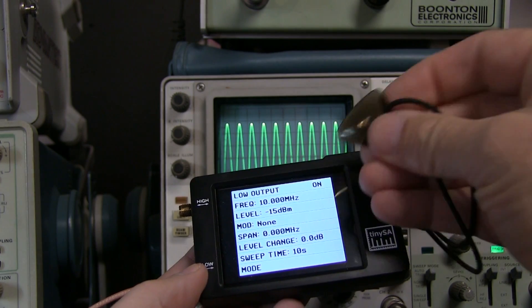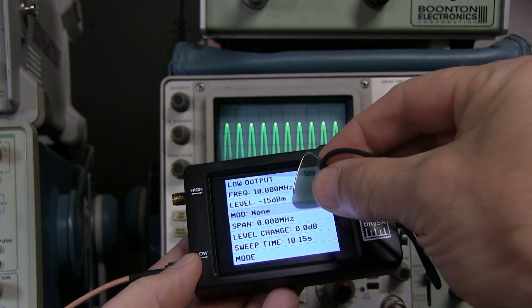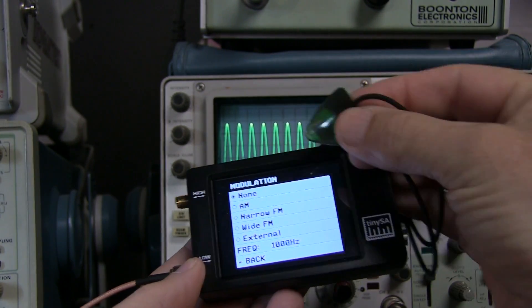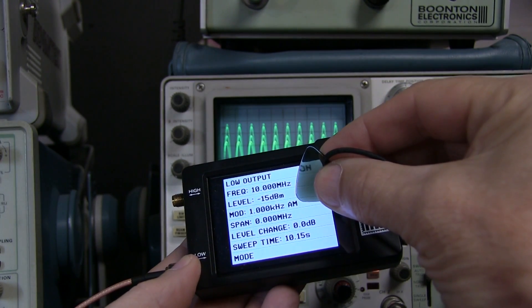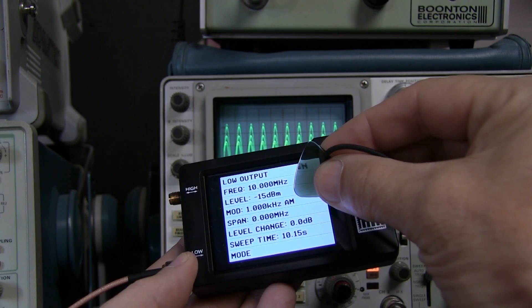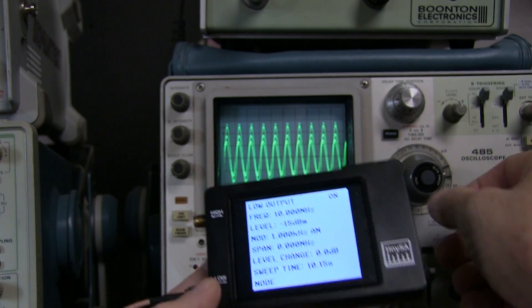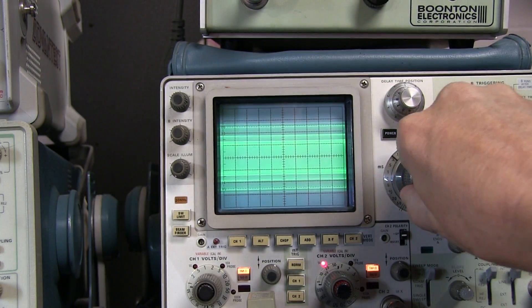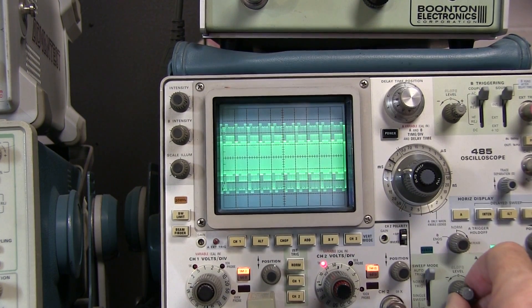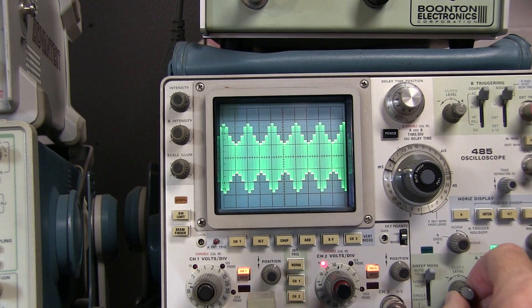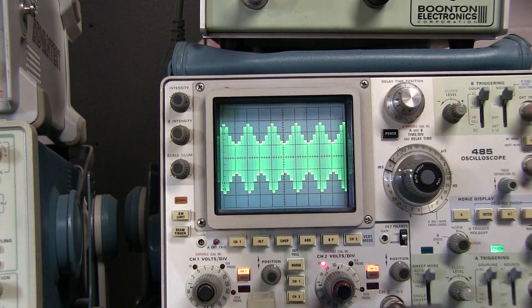Now there is a setting to turn on modulation, so we'll go to modulation, and instead of selecting none, let's set AM, and that's currently doing a 1 kHz amplitude modulation. And so if we look at the scope, and we scroll back down here to a slower sweep speed, adjust our trigger, now I can actually see the amplitude modulated signal.